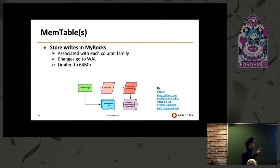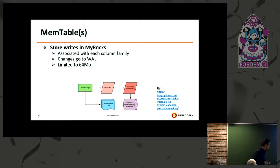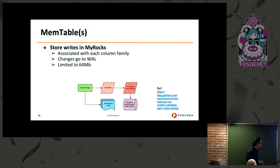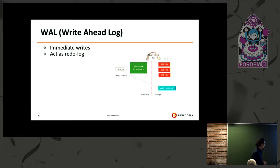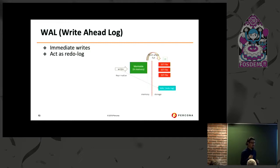The memtables allow writes to happen fast while we also have a log of it written in storage, and then it gets flushed to the table. Memtables are limited to 64 megabytes and are optimized for fast read and write. The WAL is the write-ahead log, comparable to InnoDB's redo logs. When an immediate write happens it's also written into the log, which also helps with crash recovery.